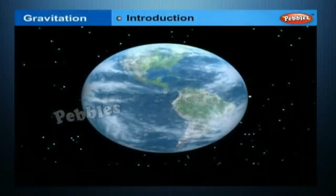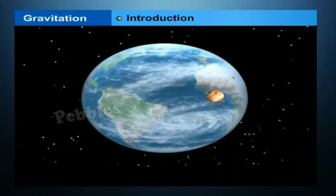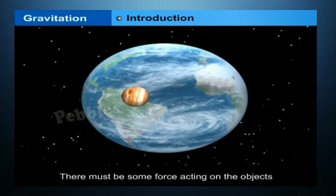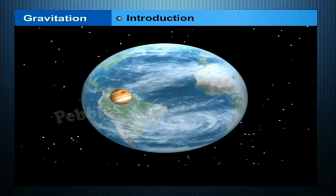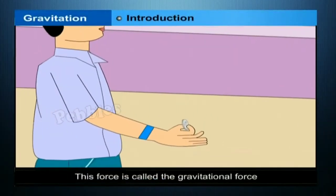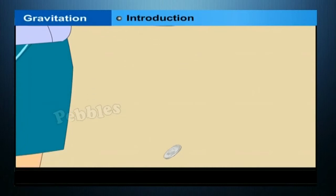The moon goes around the earth. In all these cases there must be some force acting on the objects, the planets, and on the moon. Isaac Newton could grasp that the same force is responsible for all these. This force is called the gravitational force. We shall learn about gravitation and the universal law of gravitation.